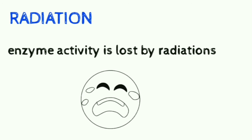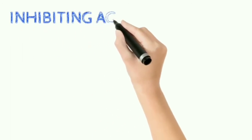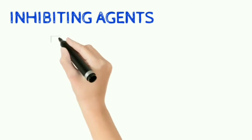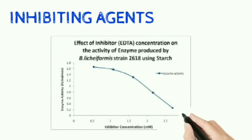The last factor for today is inhibiting agents. The enzyme activity is inhibited by salts, heavy metals, fluorides, and such compounds. In the graph shown here, you can see how drastically the graph decreases when inhibiting agents are used.